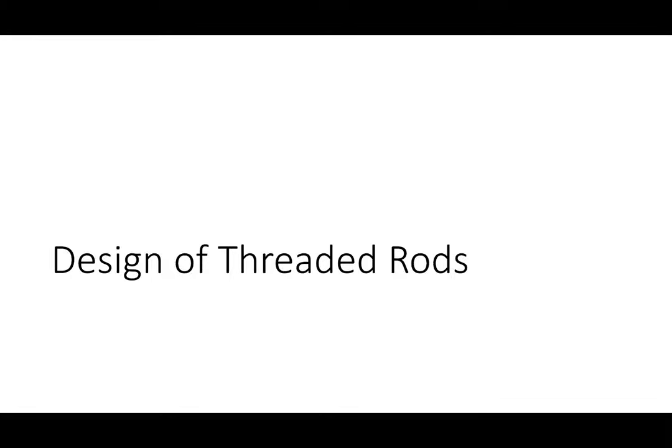Threaded rods are elements in tension that are really just round bar where threads have been cut into it. They're pretty common for sag elements and some diagonal bracing elements in buildings because they're really lightweight and efficient. Unlike other tension members that had gross section yielding, net section fracture, and block shear rupture, we only have one limit state for threaded rods, and that's tensile rupture.